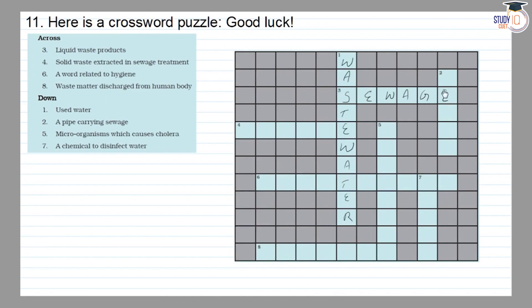The second is a pipe carrying sewage, sewage. The fourth is solid waste affected in sewage treatment — floods.